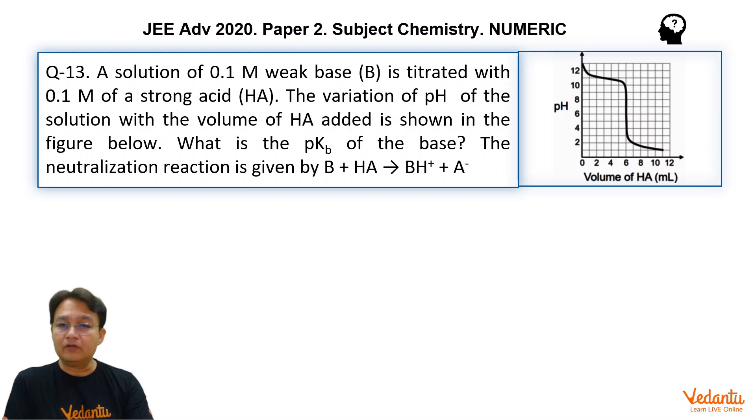A solution of 0.1 molar weak base is titrated with 0.1 molar strong acid HA. During this titration, the variation of pH is shown in a graph as you can see. On the graph you can see the volume of HA on the x-axis and the pH on the y-axis. What is asked is the pKb of the base.